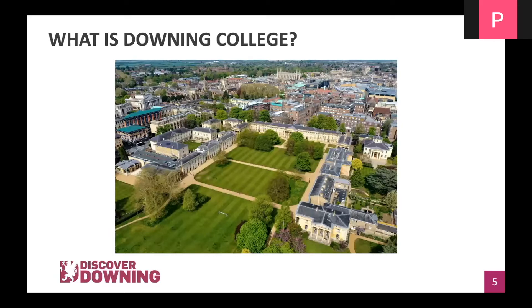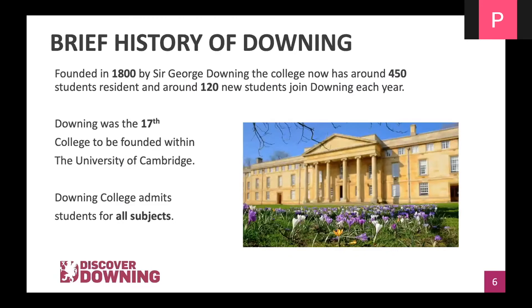So what is Downing College? We're one of the 31 Cambridge colleges that make up the University of Cambridge, and you can see our site in the centre of Cambridge. We were founded in 1800 and were the 17th college to be founded. We have around 450 undergraduate students, placing us as a medium-sized college, and we take around 120 new students each year across all subjects taught at the University of Cambridge, including, of course, chemical engineering.